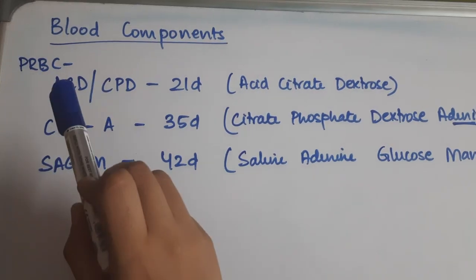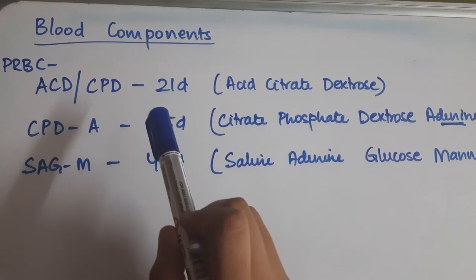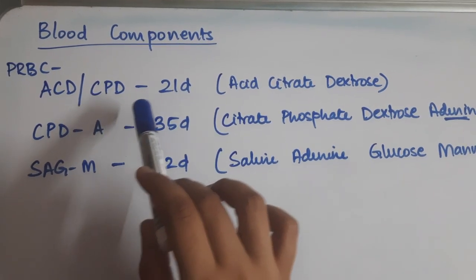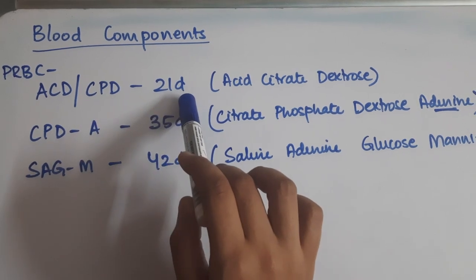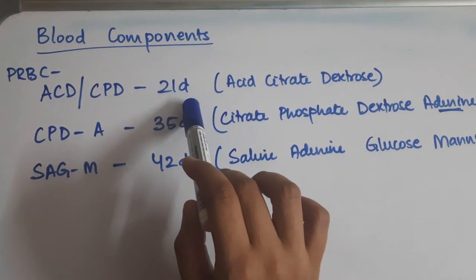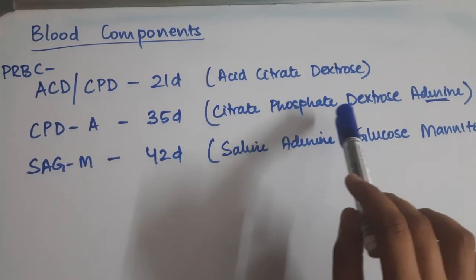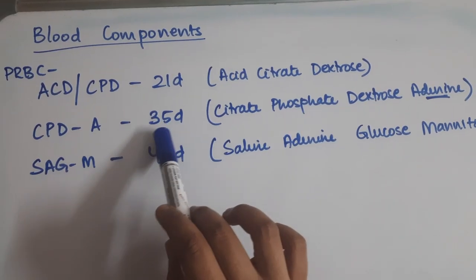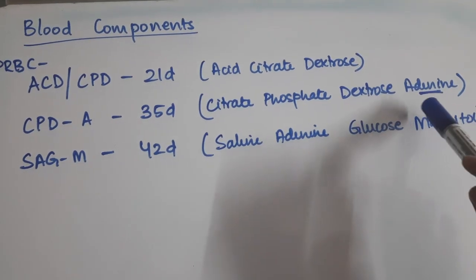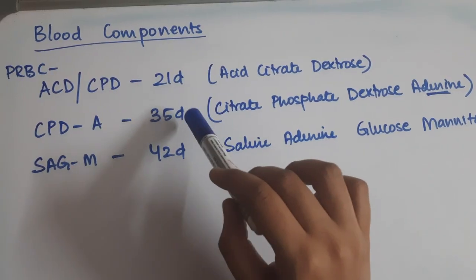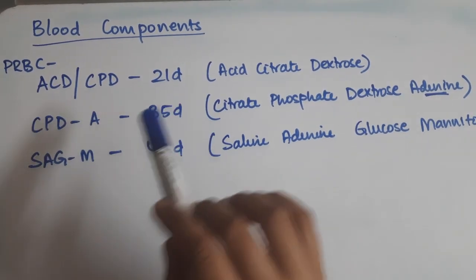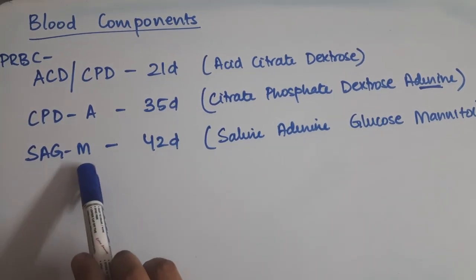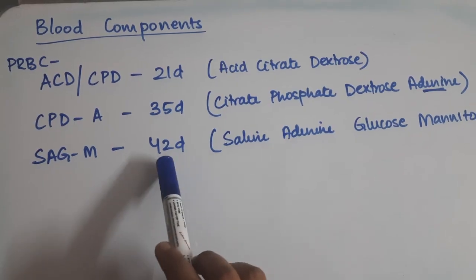The shelf life of PRBC will depend on which medium it is stored in. If it is stored in acid citrate dextrose or citrate phosphate dextrose medium, it will last for 21 days. Whereas, if it is stored in citrate phosphate dextrose adenine medium or CPDA medium, it will last for 35 days. Addition of adenine to this medium will increase the shelf life. In saline adenine glucose mannitol or SAG-M medium, it can be stored for a period of 42 days.